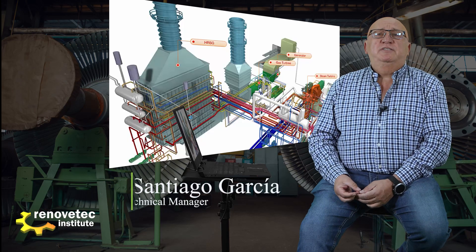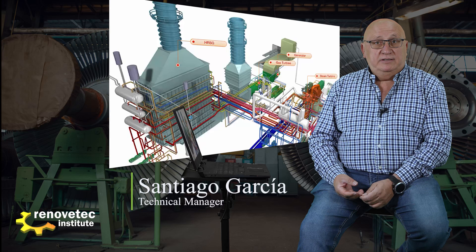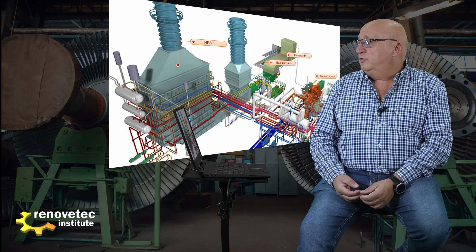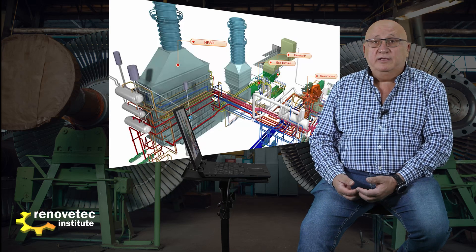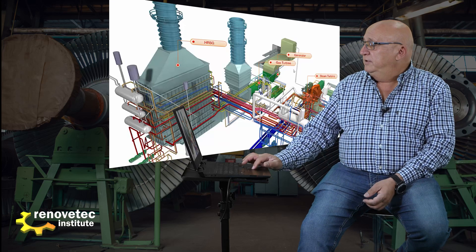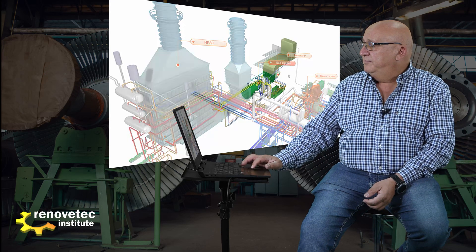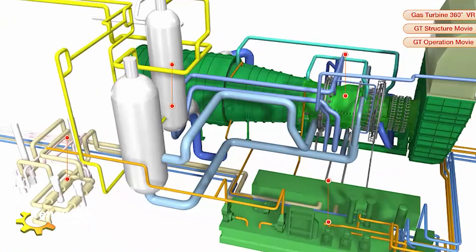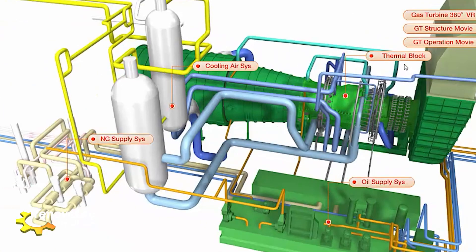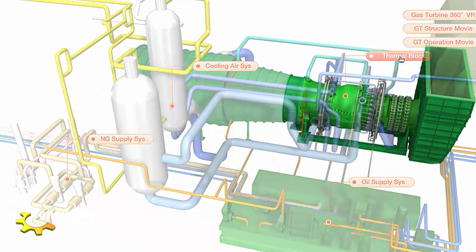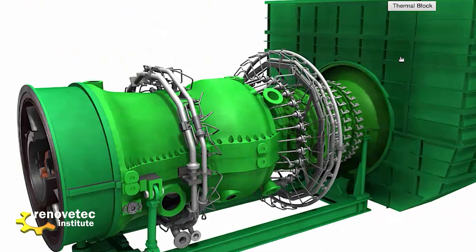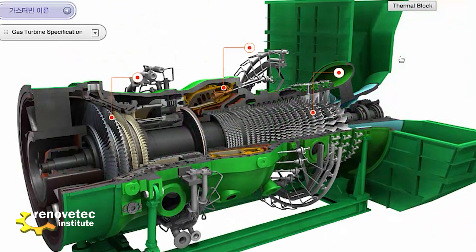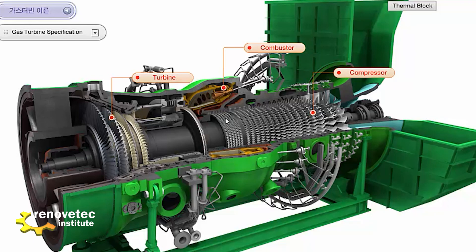Normally the GT26 is inside a combined cycle because it combines very well with a steam turbine. In this graphic we can see the turbine, and if we open it, we see that it is composed of three main parts: the first one is the compressor, the second one is the combustor, and the third one is the turbine.